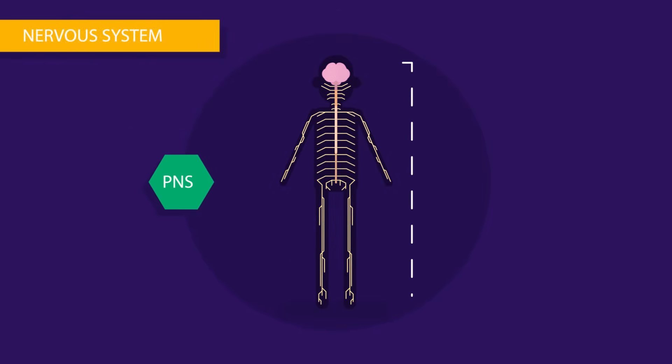PNS consists of total 43 pairs of nerves, among which 12 originate in brain, named as cranial nerves, and 31 originate from spinal cord, hence called spinal nerves.